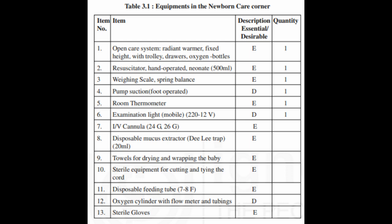3.3.2 Design of Newborn Stabilization Unit in CHC First Referral Units — Location and Size. All CHC first referral units must have clearly established arrangements for the prompt, safe and effective resuscitation of babies and for the care of sick newborns. Most sick newborns can be stabilized at this level. For setting up a four-bedded stabilization unit where four radiant warmers can be kept, at least 200 square feet of floor space (40–50 square feet per bed) is required. The unit should be located within or in close proximity to the labor room. In addition, two beds in the postnatal ward should be dedicated for rooming in.